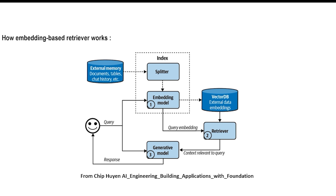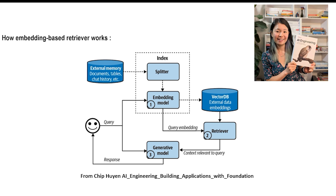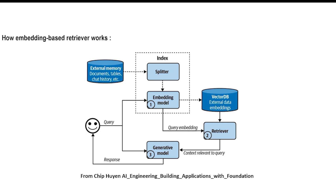Let's break down how embeddings work in a retrieval augmented generation RAG system, using a diagram from the AI Engineering book. The process starts with external memory, which can be documents, tables, chat history, or any structured and unstructured data. Since these documents are usually large, we first need to process and index them before retrieval. This is done in two steps: the system splits large documents into smaller chunks so they can be processed efficiently, ensuring we retrieve only the most relevant pieces of information instead of entire documents.